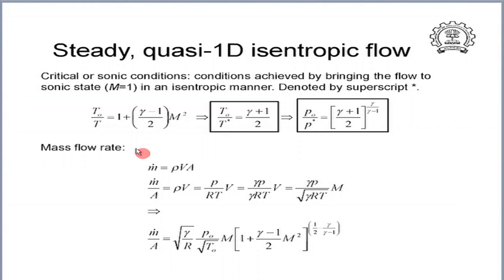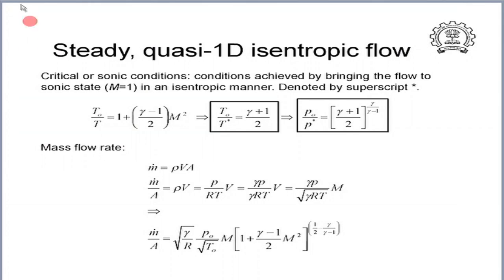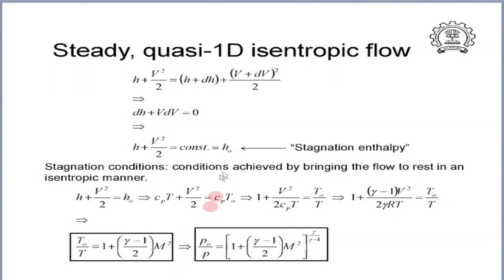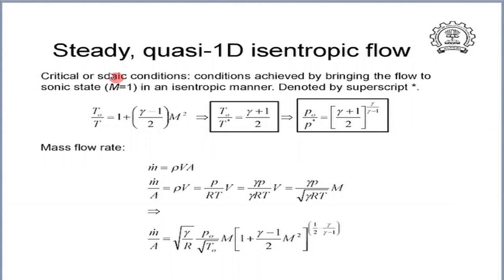There is one more reference condition called the critical or sonic condition. Rather than bringing the flow to rest as in the stagnation condition, we imagine bringing the flow isentropically to a Mach number of 1. The condition when M = 1 is achieved is called the sonic or critical condition. Just as stagnation conditions are denoted by subscript 0, critical or sonic conditions are denoted by a superscript star.